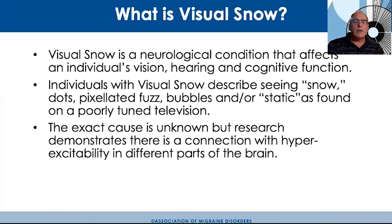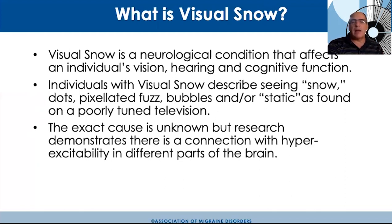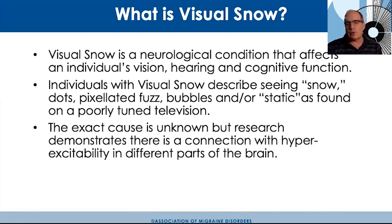Visual snow is a neurologic condition that affects an individual's vision, hearing, and cognitive function. So it's really a multimodal condition, even though it's called visual snow. Individuals with visual snow describe seeing snow, dots, pixelated fuzz, bubbles, or static — kind of like a poorly tuned television. The exact cause is unknown, but research demonstrates a connection between hyper-excitability and different parts of the brain, which is an important aspect especially as it relates to migraines.